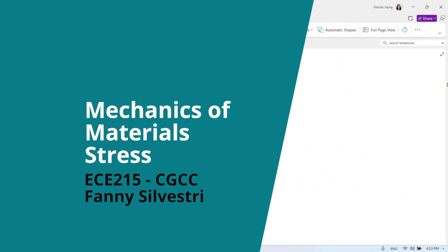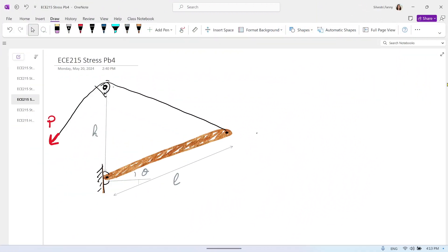Okay, in these problems, we will start doing a little bit of statics. Just use what we learn in statics to find the stress in a cable. So we have a beam that is quite heavy. The beam has a mass of 500 kilograms.